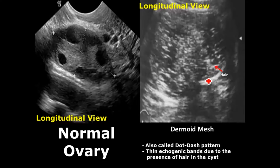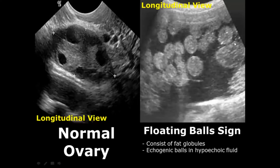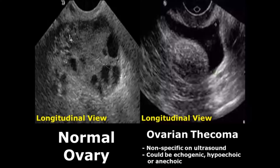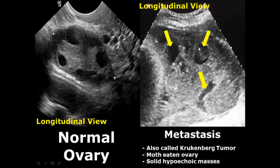Another feature is the floating ball sign — fat globules inside the cyst appearing as hyperechoic fat globules inside a hypoechoic fluid. Ovarian fibroma is a benign tumor — a solid hyperechoic mass that may sometimes have cysts. Metastases appear as solid hyperechoic masses in the ovary with a specific moth-eaten appearance showing hole-like structures, also known as Krukenberg tumor.